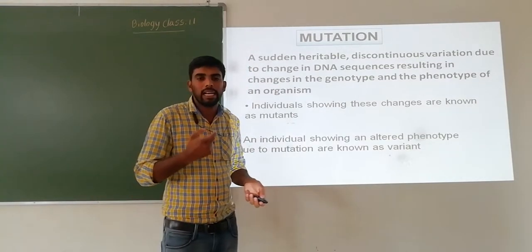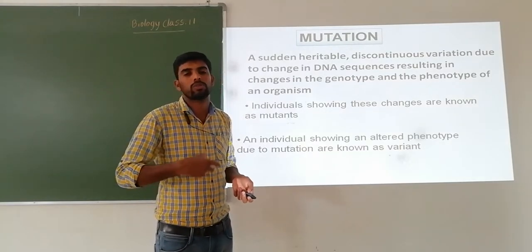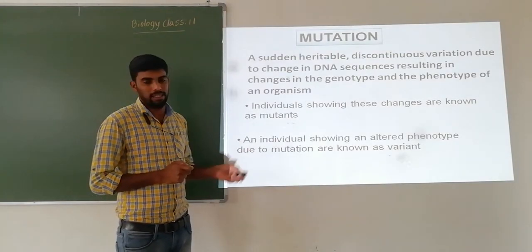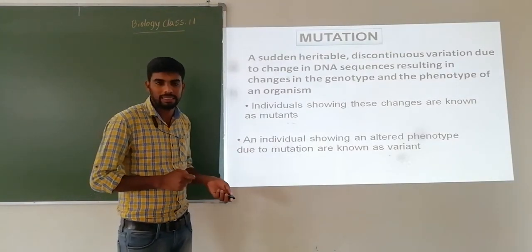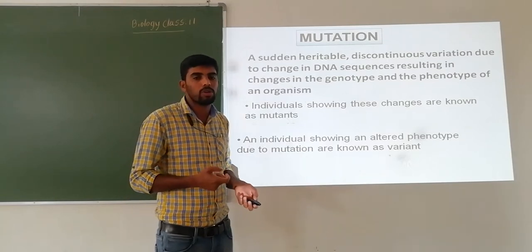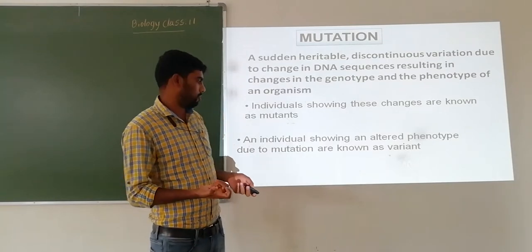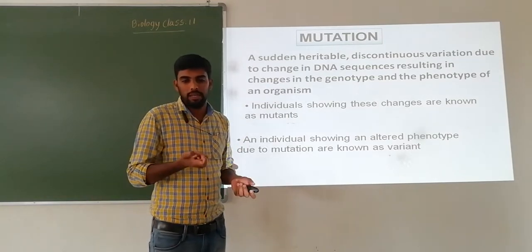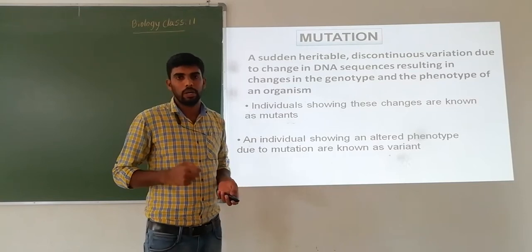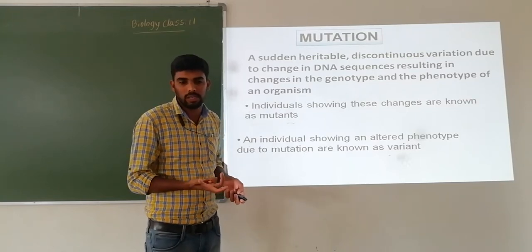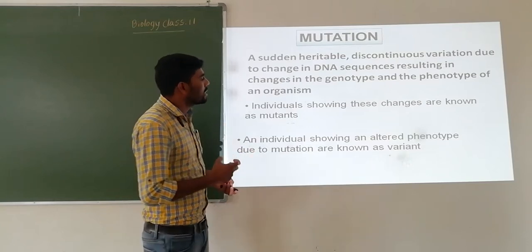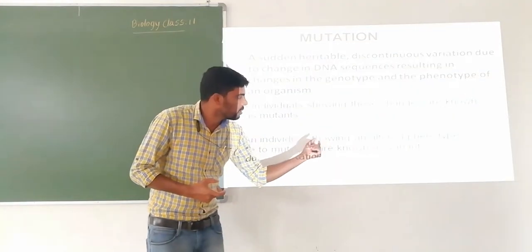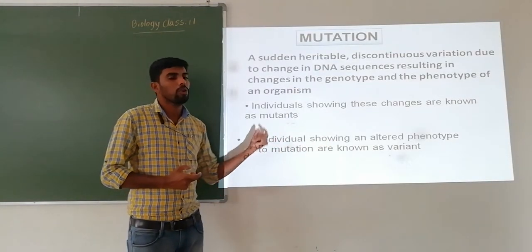Organisms or individuals that show mutation — sudden changes — are called mutants. Mutants are individuals or organisms that have shown mutational changes. And if an individual shows an altered phenotype or altered characteristics due to mutation, such changes are called variants.